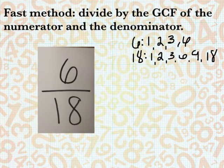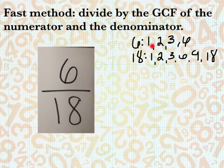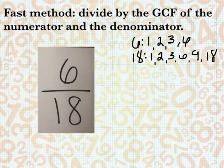I got these numbers because I know 1 times 6 is 6, 2 times 3 is 6. 1 times 18 is 18, 2 times 9 is 18, 3 times 6 is 18. So now in order to identify our GCF, we have 1 as a common factor.